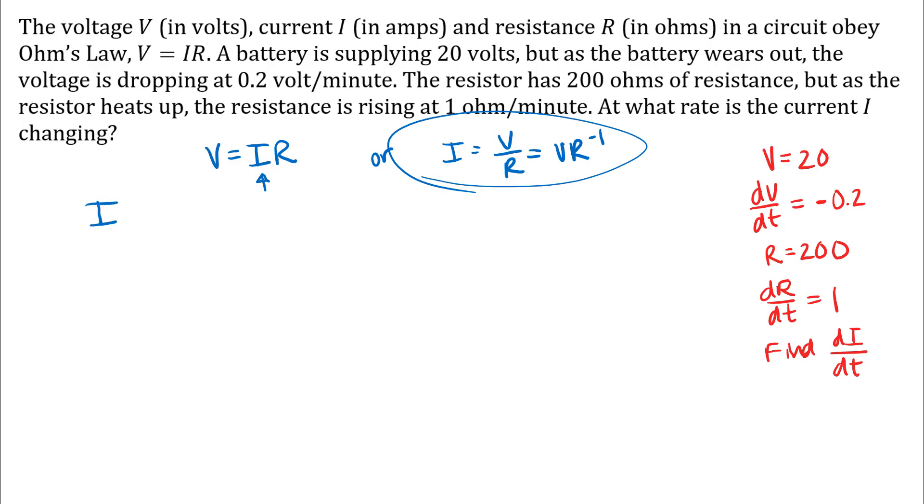So I have I as a function of V and R, and everything is changing with respect to time. So when I write down my chain rule, I'll have dI/dt is ∂I/∂V times dV/dt plus ∂I/∂R times dR/dt.